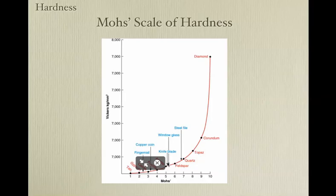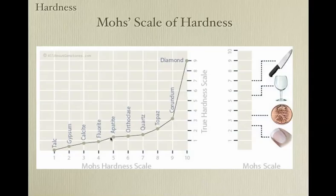Here is the Mohs hardness scale: talc, gypsum, calcite, fluorite, apatite, feldspar, quartz, topaz, corundum, and diamond. Hardness of your fingernail is about 2.5. Penny, about 3.5. Glass, about 5.5. A knife, about 7. Steel nail, probably about 5.